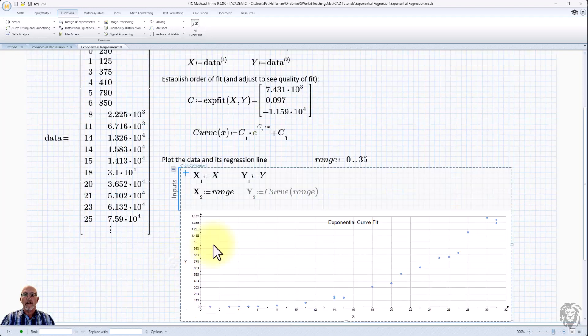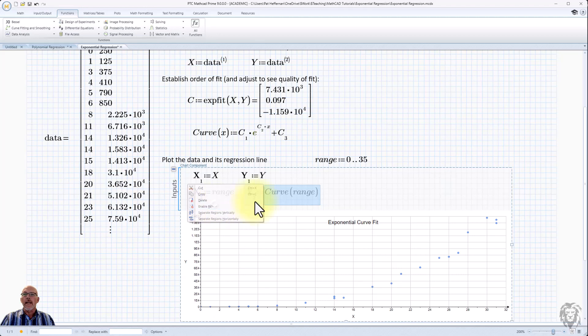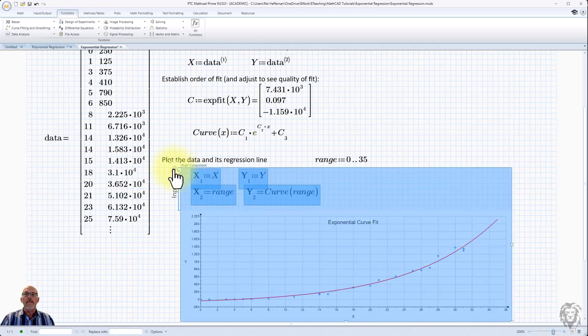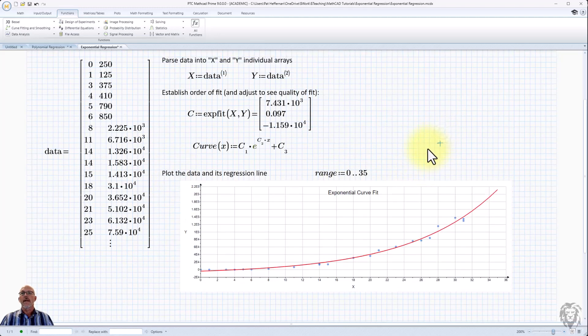Now if I go into my chart component, I've already set it up. I've just made it inactive. If I can enable the region, it's now going to show me the curve fit that we just did, and I can get rid of the inputs.